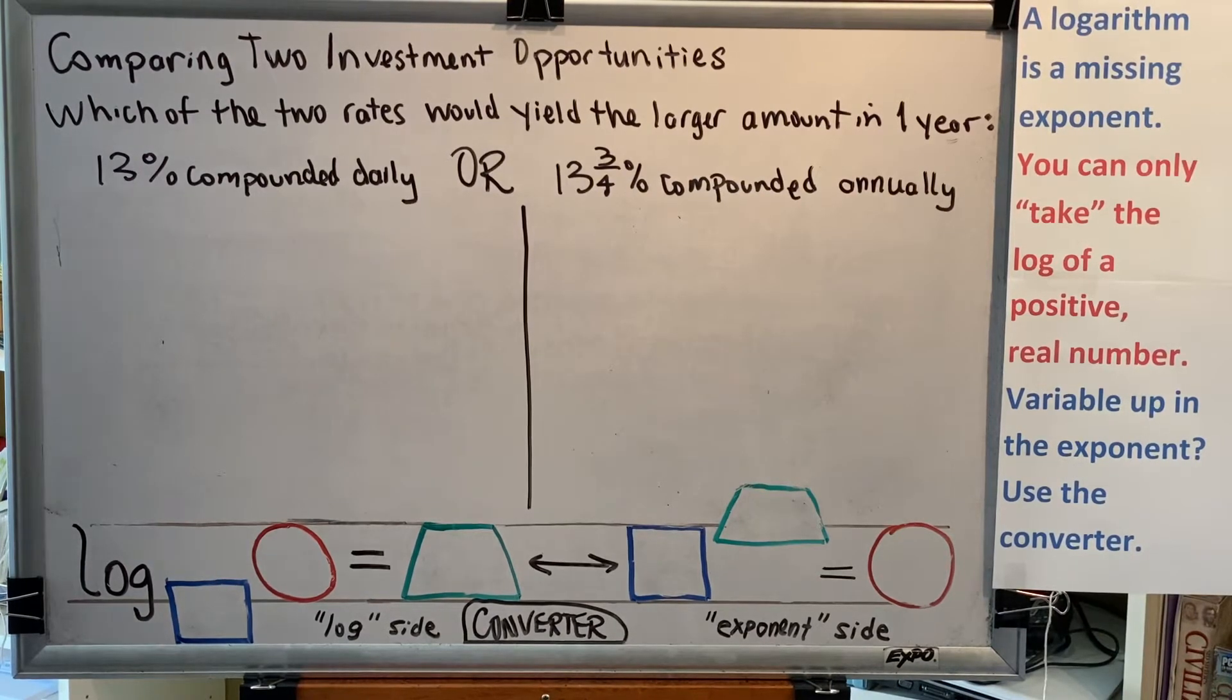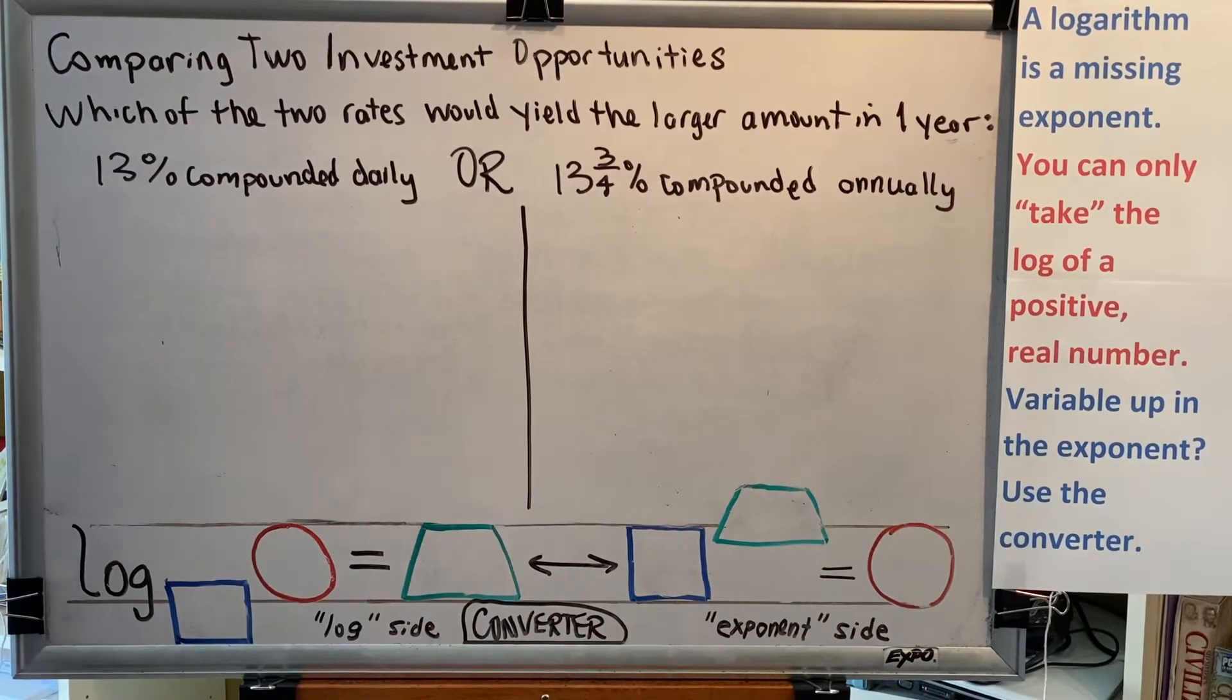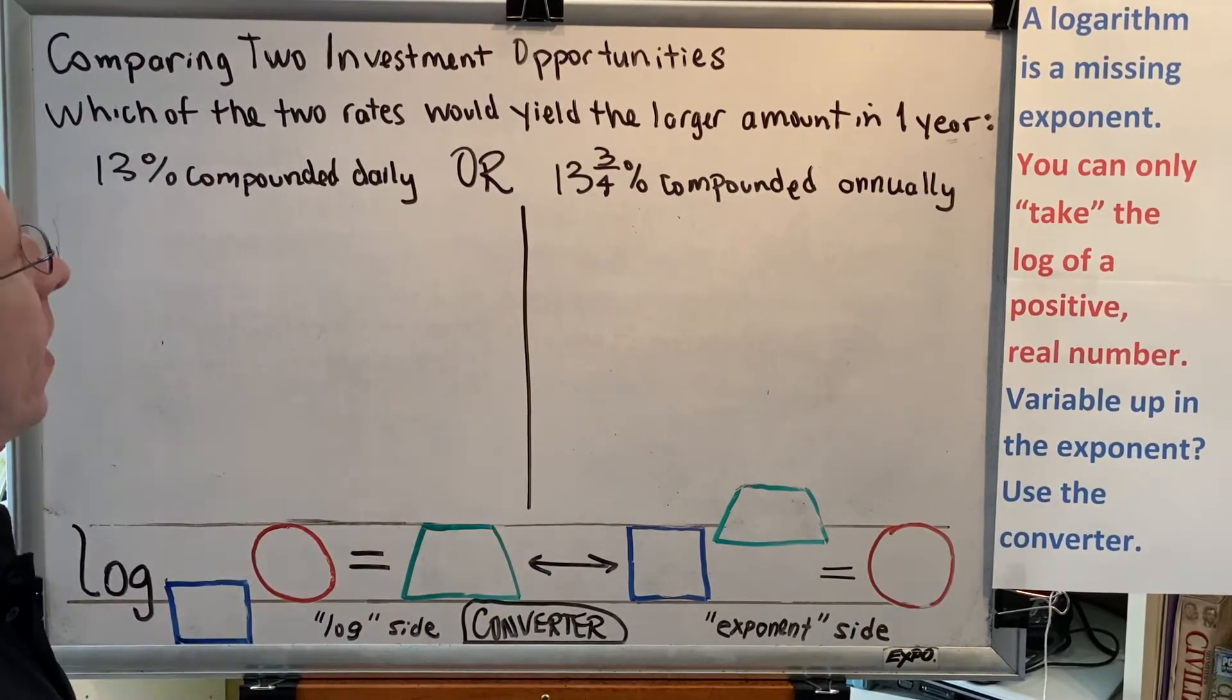Which of the two rates would yield the larger amount in one year? 13% compounded daily or 13 and 3 quarters percent compounded annually?